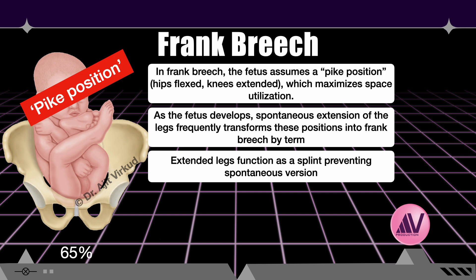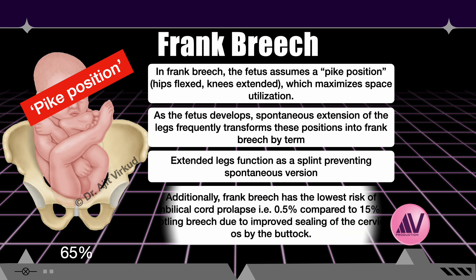Frank breech predominates at term because it optimally balances fetal accommodation, stability, and reduced complication risk in a restricted intrauterine environment. Additionally, frank breech has the lowest risk of cord prolapse at 0.5%, compared to 15% in footling breech, due to improved sealing of the cervical os by the buttocks.